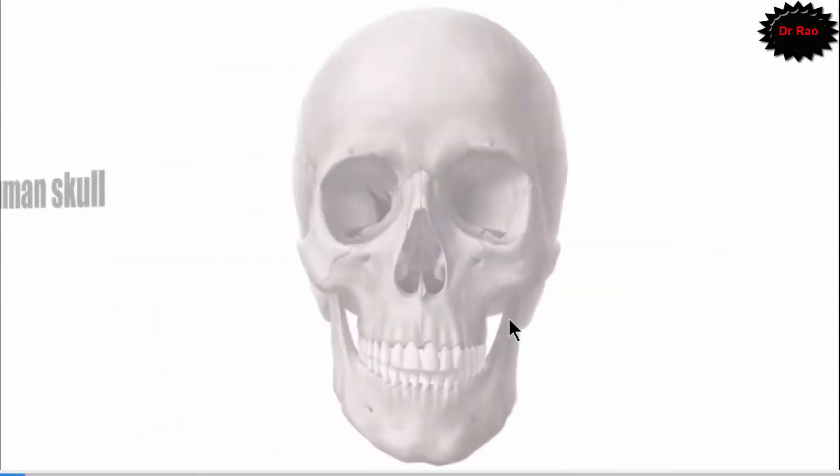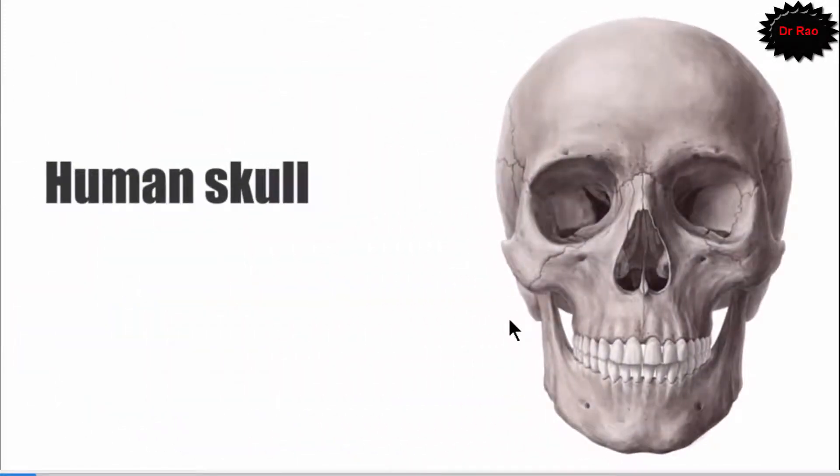Today we are going to talk about bones of the skull. The human skull is actually a bony covering or case which is for the protection of the brain, eyes, and nerves.